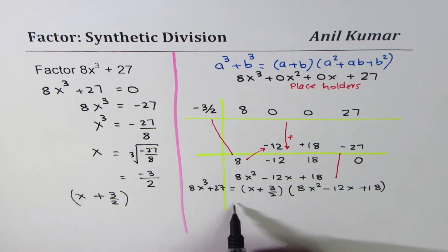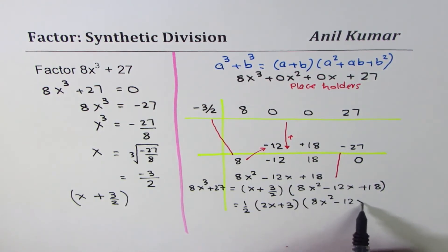It's good to write without fractions, so we can take half common. Do you see that we can take half common? So we get (2x + 3) times (8x² - 12x + 18).